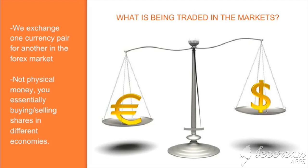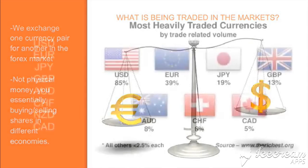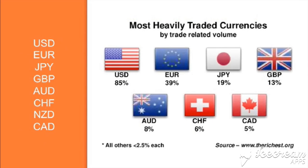Let's talk about the most common currencies exchanged in the Forex market. Some of those include the United States dollar, the euro, the Japanese yen, the pound, the Swiss franc, the Canadian dollar, the Australian dollar, and the New Zealand dollar. Those are the most common ones you will see exchanged in the Forex market. There are others, but those are the ones we will put most of our focus on.